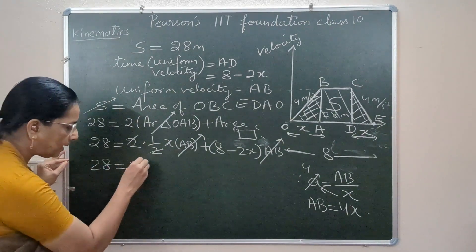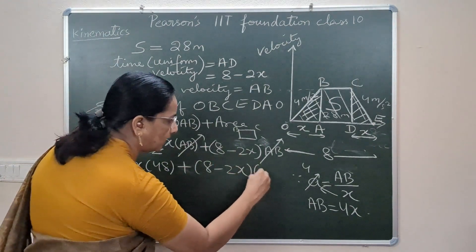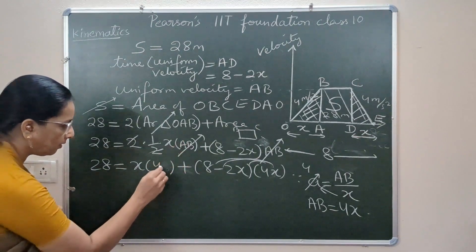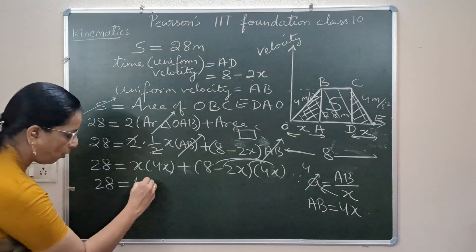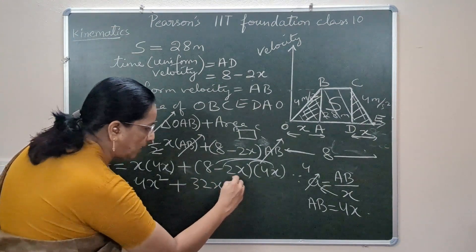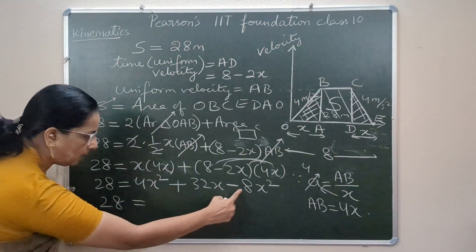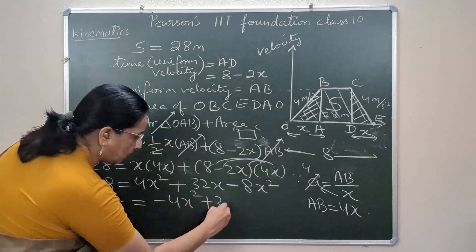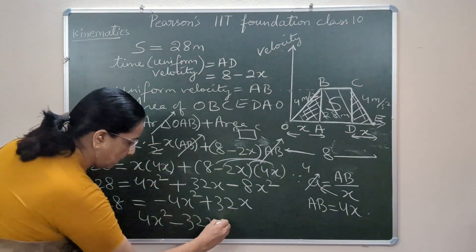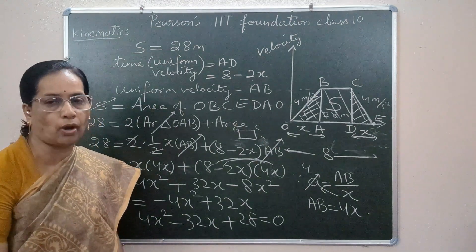Expanding by distribution: 28 = 4X² + 32X minus 8X². Simplifying: 28 = minus 4X² + 32X. Transposing to the left side: 4X² minus 32X + 28 = 0. Dividing throughout by 4 to get standard form: X² minus 8X + 7 = 0.